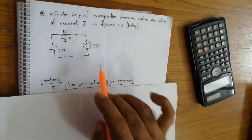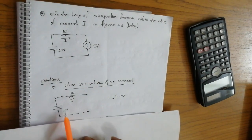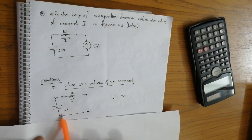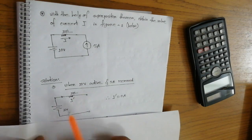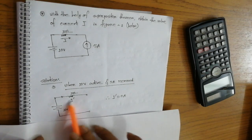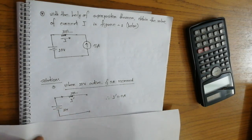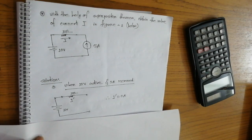With the 10V source active and the current source open, we can find i prime. Since the current source is open, the current flow is interrupted on that branch, so i prime equals 0 amperes.